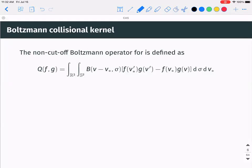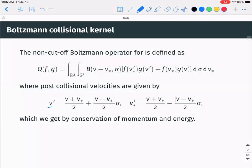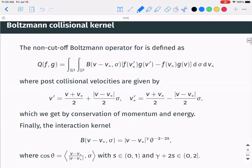The collision operator B has this structure: it's a difference of a product of pre- and post-collision velocities. The velocities v' and v'* are the post-collision velocities of two particles, where v* and v are the pre-collision velocities. The formulas for post-collision velocities come from conservation of momentum and conservation of energy.